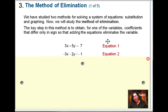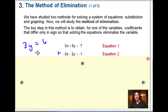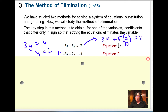Looking at these two equations: if I just add them, the 3x and negative 3x cancel to zero. Then I've got 5y plus negative 2y, which makes 3y. And then 7 plus negative 1, which is 6. So I get 3y equals 6, giving y equals 2. I plug that back into the top equation: 3x plus 5 times 2 equals 7, so 3x plus 10 equals 7, meaning 3x equals negative 3.